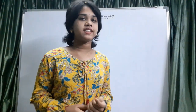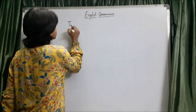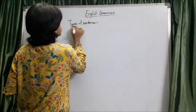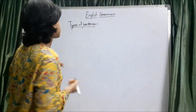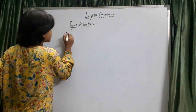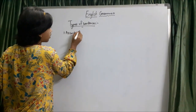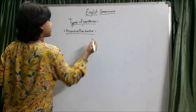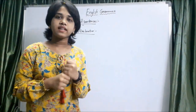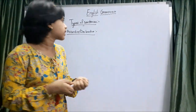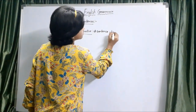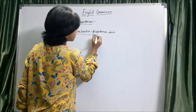Let's come to the types of sentences. There are four types of sentences. The first one is assertive or declarative. What is an assertive sentence? A sentence which states a fact.